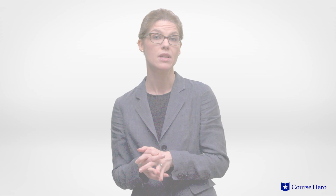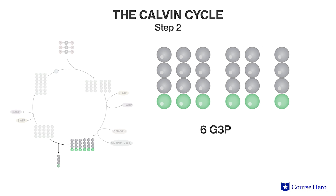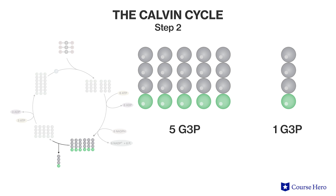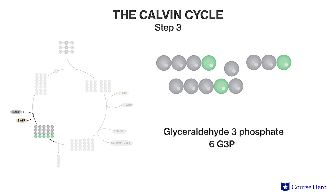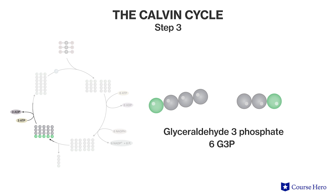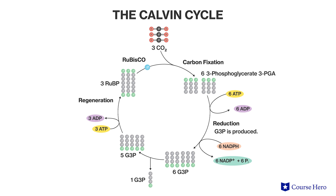Importantly, for every three molecules of carbon dioxide that enter the cycle, six molecules of G3P are formed. Five of these G3P molecules will be recycled into RUBP in the next step. Only one molecule leaves the cycle, resulting in a net production of one G3P for every turn of the cycle, so it takes six turns to produce a single molecule of glucose. The final step is the regeneration of RUBP from the five molecules of G3P. Remember that neither the light reactions nor the Calvin cycle alone can make sugar from carbon dioxide — both stages are required for photosynthesis.